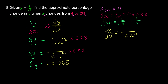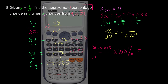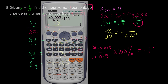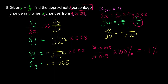But this is not the final answer because they ask us to find it in percentage. To convert to percentage, divide the change by the original and multiply by 100%. The change in y is negative 0.005, and the original y is 1/2, which is 0.5. So plugging into the calculator: negative 0.005 divided by 0.5 times 100% gives negative 1%, and that is the answer.